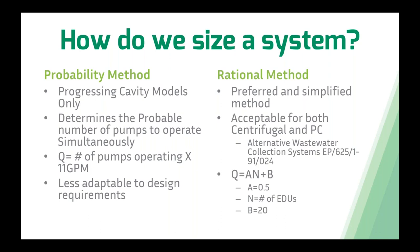The rationale method is stated by the EPA as the preferred and simplified method for analyzing pressure sewer systems. It is acceptable for both centrifugal and progressing cavity systems and is adaptable to design requirements. The flow rate is determined by Q = aN + b, where a is typically 0.5, N is the number of EDUs (equivalent dwelling units), and b is 20. For 100 homes: Q = 0.5 × 100 + 20 = 70 gallons per minute. It is also more adaptable — commercial connections can be converted to EDUs based on daily flow rate, and the a or b values can be adjusted for all-commercial systems.